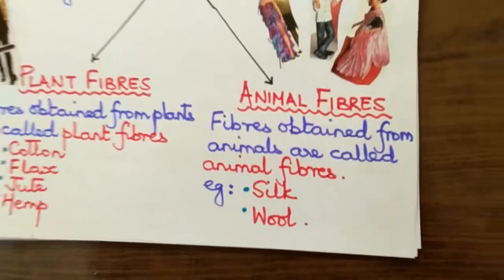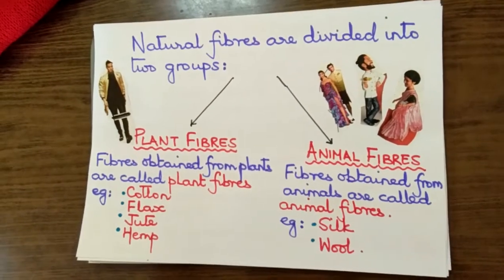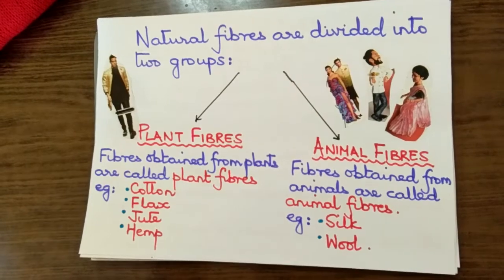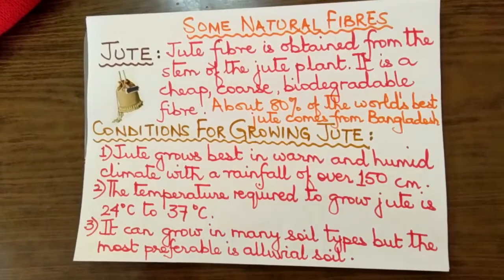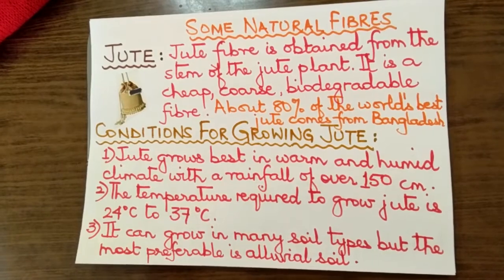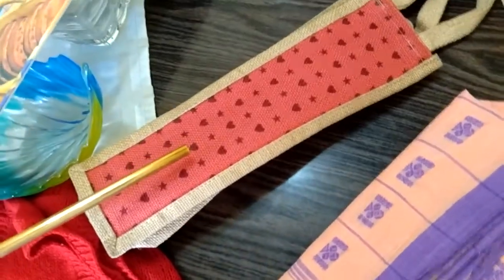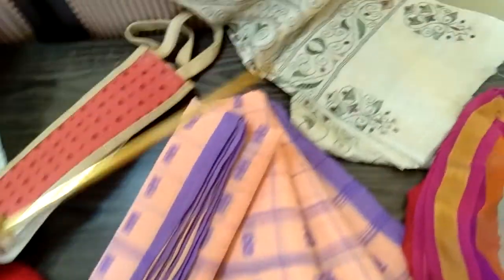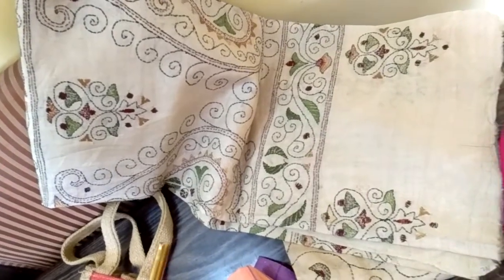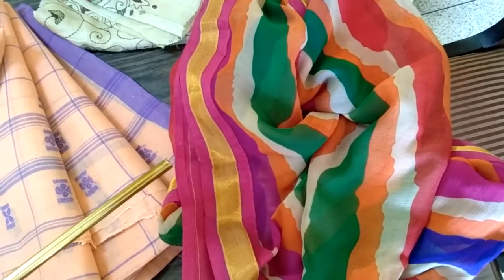Your first activity is to collect samples of different fabrics made from natural and synthetic sources. You can stick them in a project file or scrapbook later. Let me show you some fabric made from natural and synthetic fibers. This is a saree made out of cotton, this is a jute bag, this is a woolen cardigan, this is a chunni or dupatta made of silk, and this is the same made out of synthetic or nylon fiber.